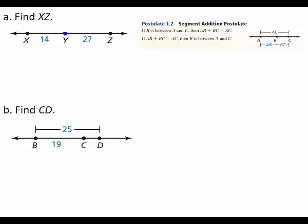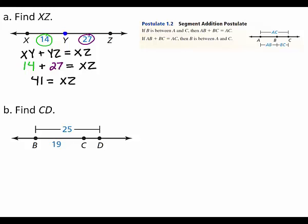In part A, point Y is between X and Z. So, by the Segment Addition Postulate, the length of segment XY plus the length of segment YZ equals the length of segment XZ. From the diagram, you can see that the length of segment XY is 14 and the length of segment YZ is 27. 14 plus 27 gives you 41. Therefore, the length of segment XZ is 41.